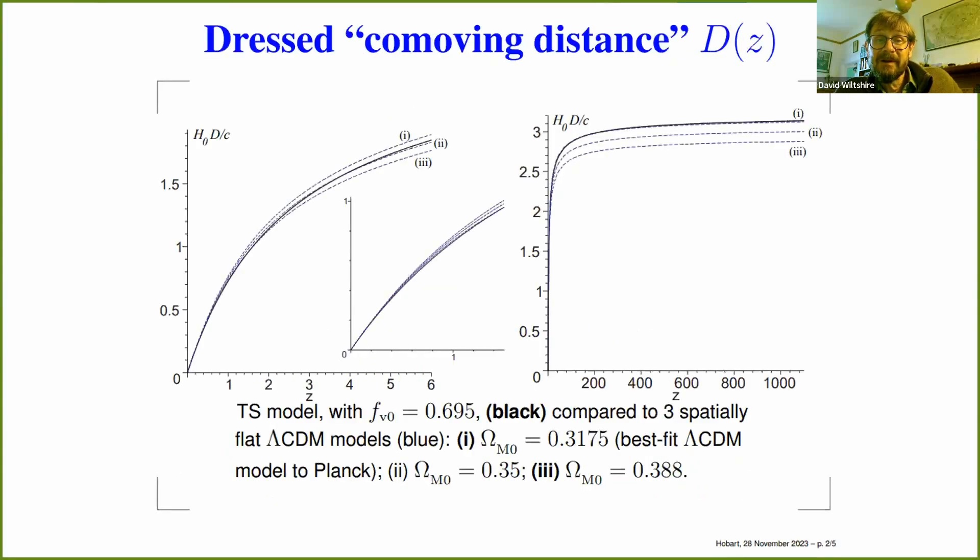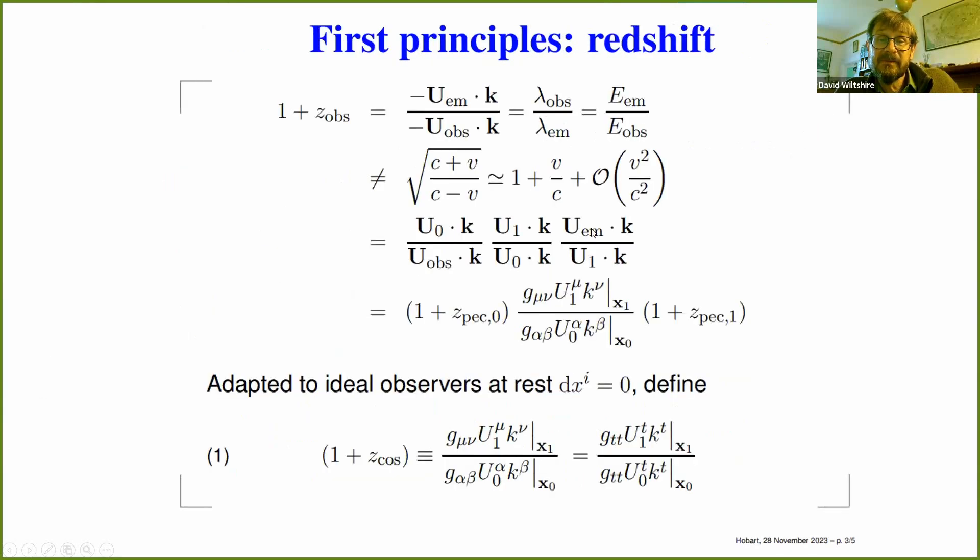The Hubble distance, what's important is the timescape model is the black curve, it interpolates between different Friedman models which have different matter densities. It is the shape of these curves, which is entirely important.